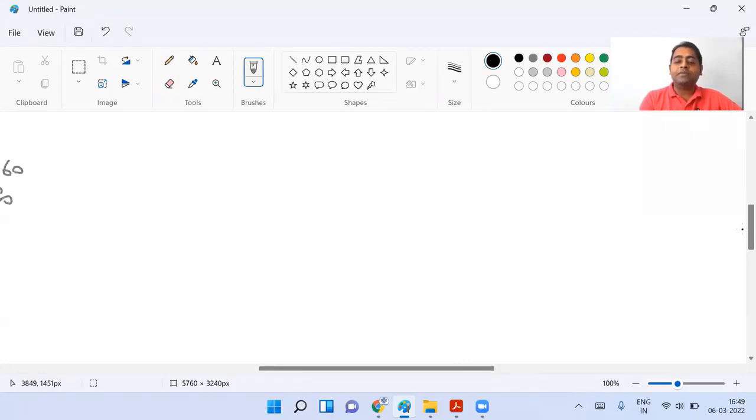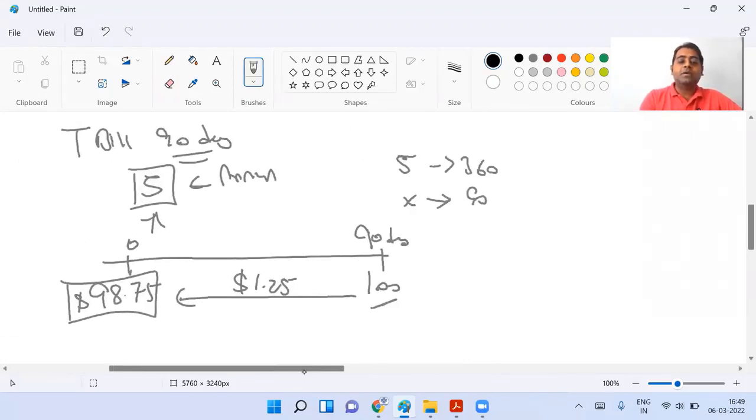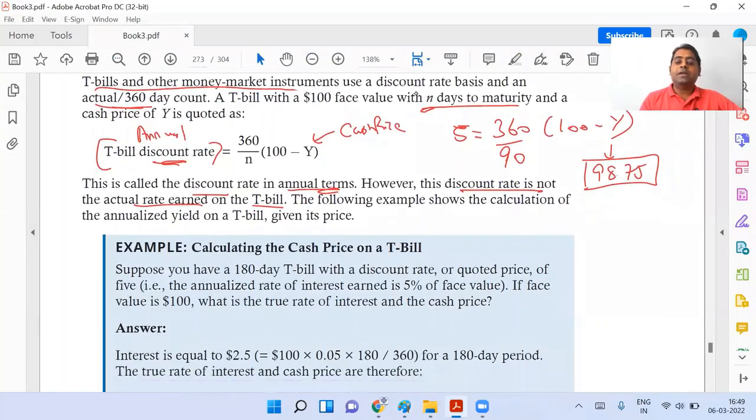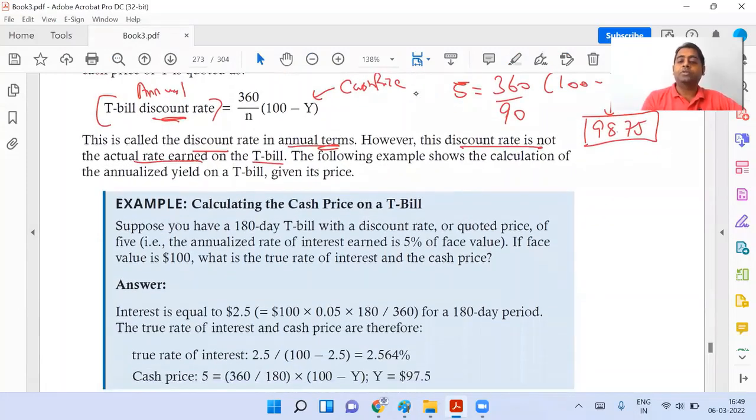If I go to the other example, you're generating an income of 1.25 by paying 98.75. So I can just calculate like this to get the true rate of interest. It's going to be 1.25 divided by 98.75, and I'm getting an answer of 1.266%. This is the true rate of interest that I am generating. The same part has been explained in the question.